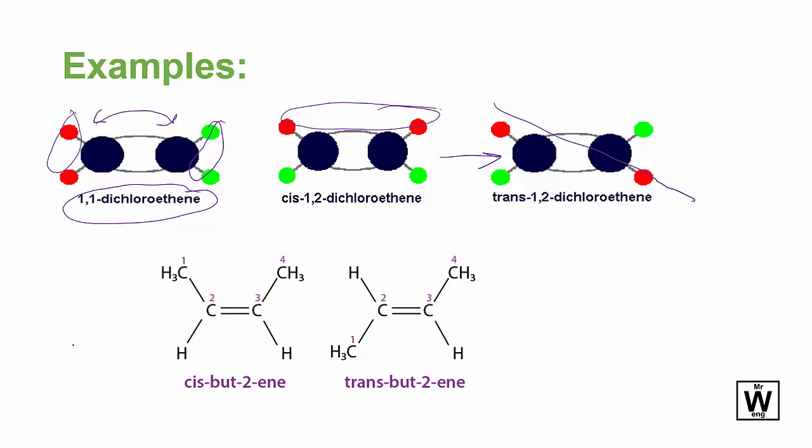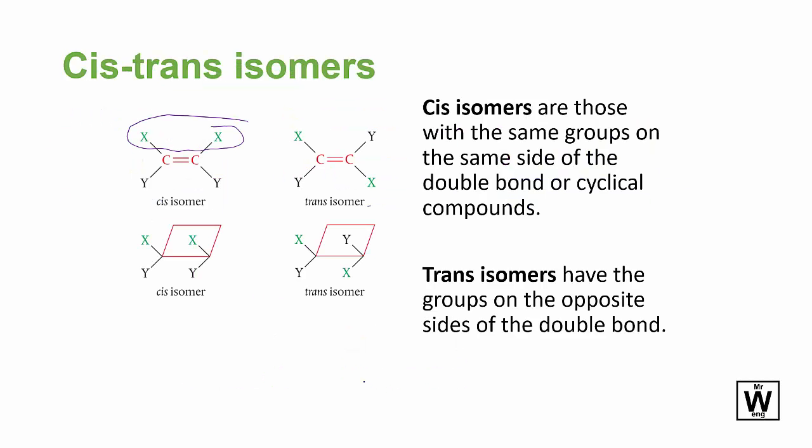And that's how you name them here. So this is just a repeat with a clearer structural formula here. So cis-but-2-ene, trans-but-2-ene. The cyclic compounds we're not covering, but just to be aware of them.